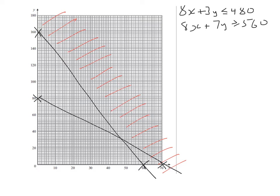Let's pick 0, 0 again. I'll put 0 there and 0 there. Is 0 plus 0 greater than 560? No it isn't. So this is the region that we don't want and this is the region we do want. Because in this region, 0, 0 for example, the inequality doesn't work. So as before, shade out the region that you don't want and we get this.